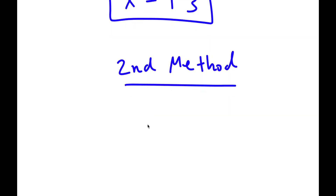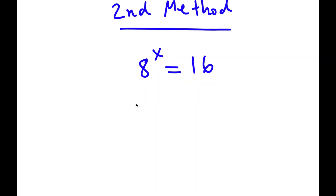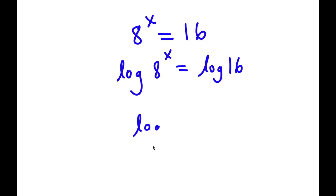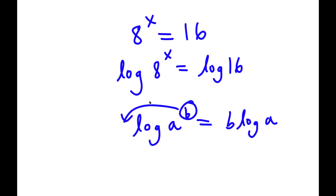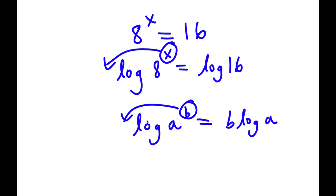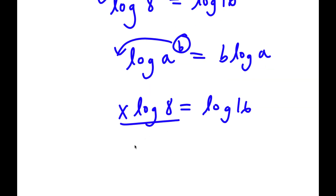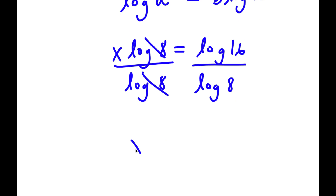For my second method, again starting with 8 to the power of x equals 16 — instead of rewriting both sides, I'm going to take the log on both sides. So log of 8 to the power of x equals log 16. Since I can move the exponent to the front, this becomes x times log 8 equals log 16. Dividing both sides by log 8, x equals log 16 over log 8.